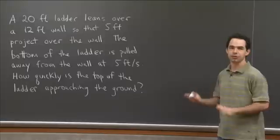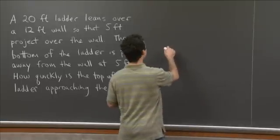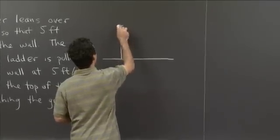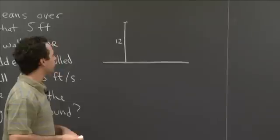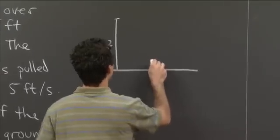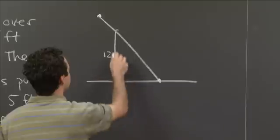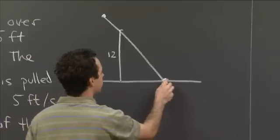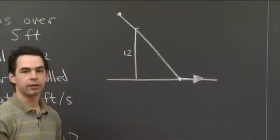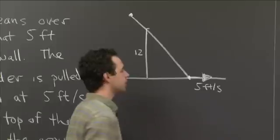Let's start off by trying to draw a careful picture. Here's the ground, and we have a 12-foot wall. We have a 20-foot ladder leaning against the wall and extending over it. The bottom of the ladder is what's getting pulled away from the wall at 5 feet per second.